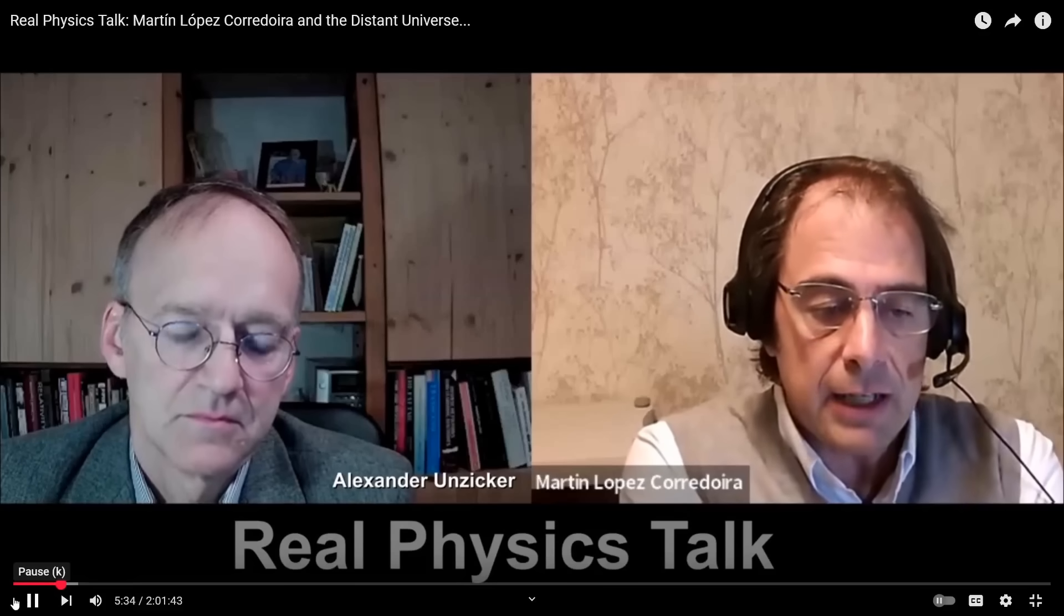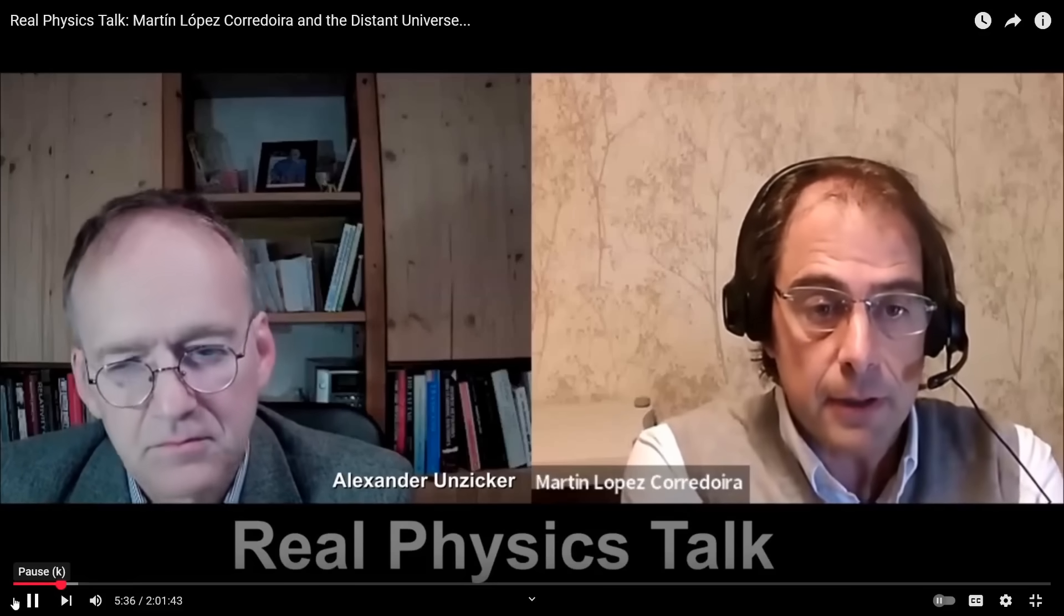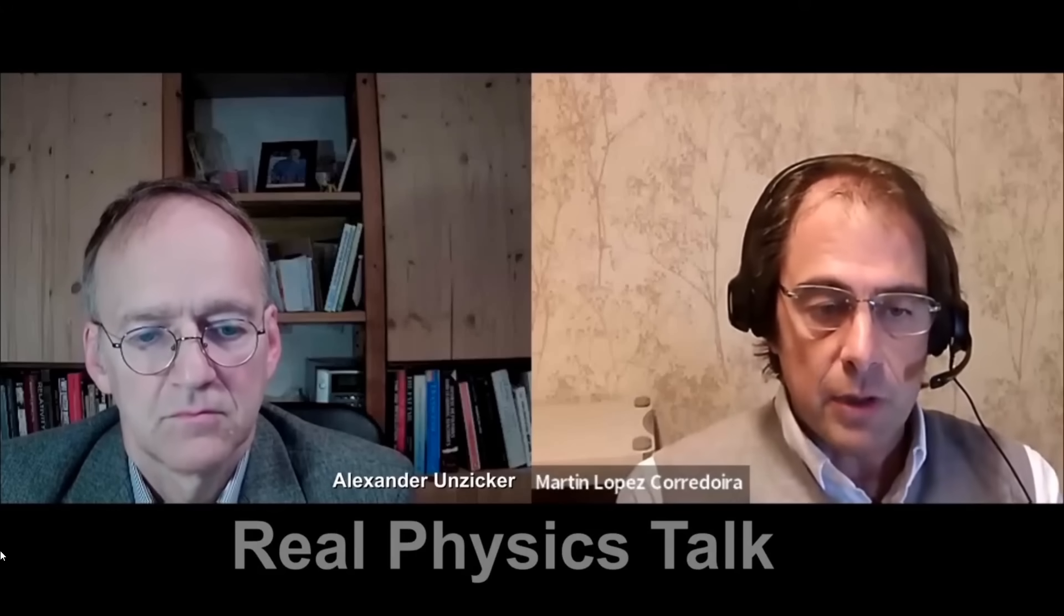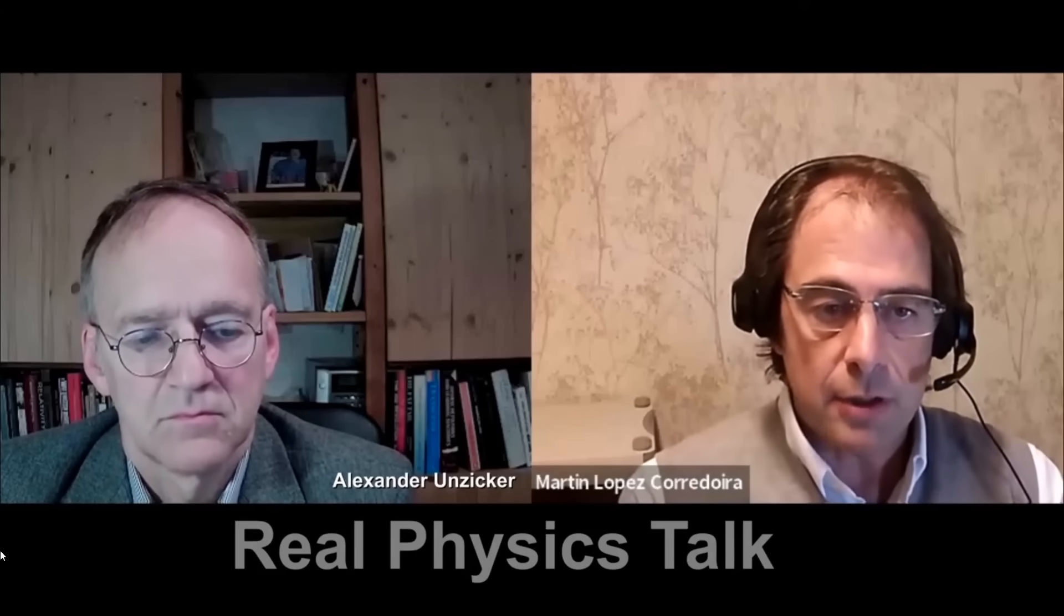We are finding that there are galaxies which are too massive. There are galaxies almost like the Milky Way in mass at least when the universe was very young, was 600, 700 megayears.